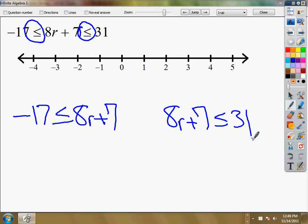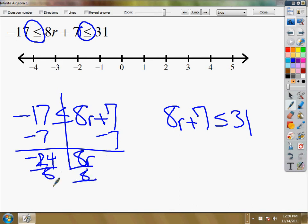So from here, I'm just solving simple equations. Minus 7 gives me negative... I don't know why I wrote a 1 there. It should be negative 24. Now, I'm dividing by a positive here so I don't have to flip the inequality over. So r is greater than or equal to negative 3.